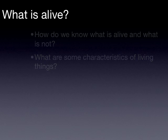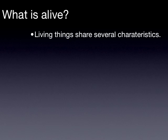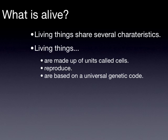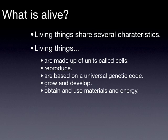While there's a wide variety of living things that exist in the world today, all living things share several key characteristics. In your textbook, you can see these characteristics and a description of them on pages 17 to 20. Living things are made up of units called cells. Living things reproduce. Living things are based on a universal genetic code. Living things grow and develop. Living things obtain and use materials and energy. Living things respond to their environment. Living things maintain a stable internal environment. And living things, as a group, change over time — meaning that they evolve.